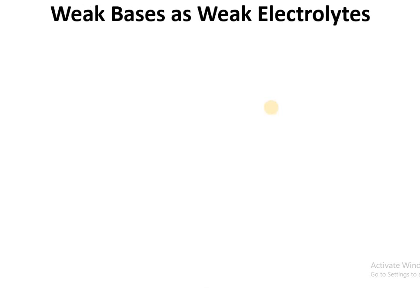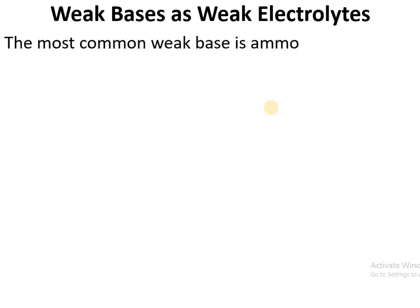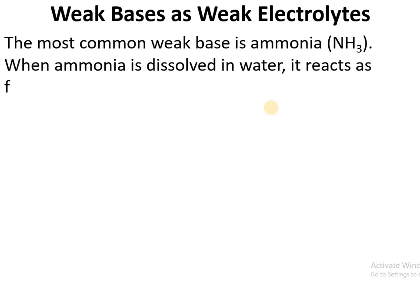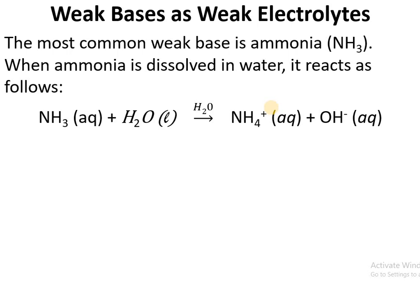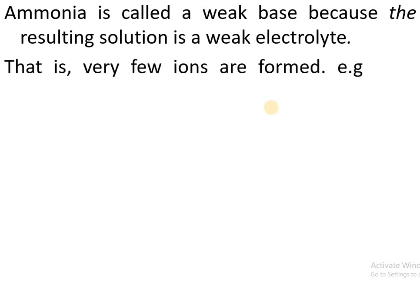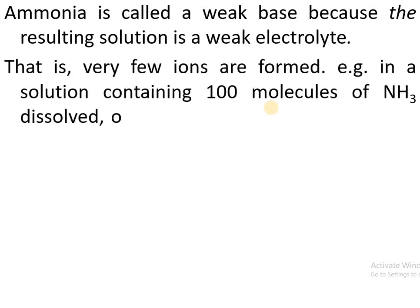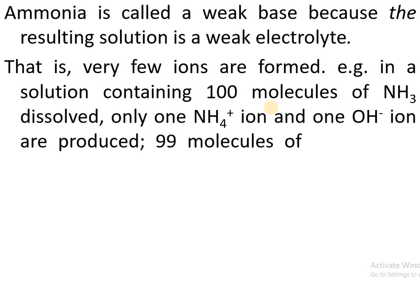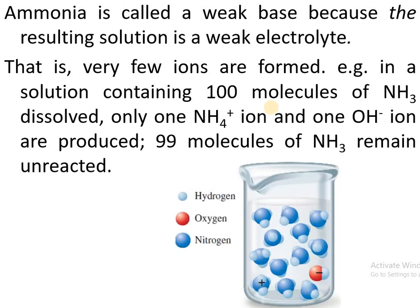Weak bases as weak electrolytes: the most common weak base is ammonia. When ammonia is dissolved in water, it reacts to produce NH₄⁺ ions and OH⁻ ions. Ammonia is called a weak base because very few ions are formed — in a solution containing 100 molecules of ammonia, only 1 NH₄⁺ ion and 1 OH⁻ ion are produced, and 99 molecules of ammonia remain unreacted.